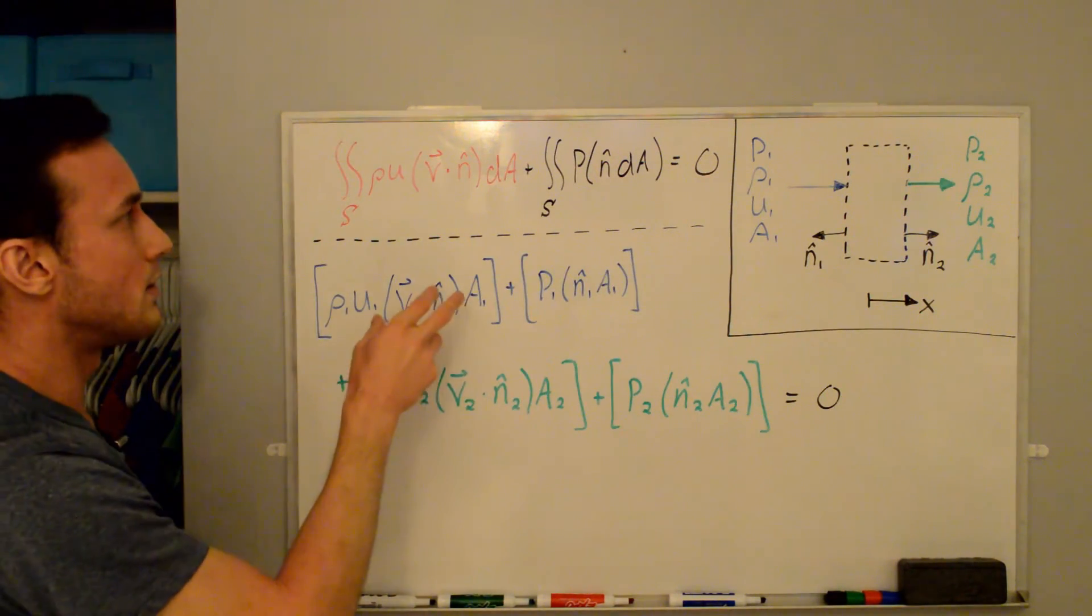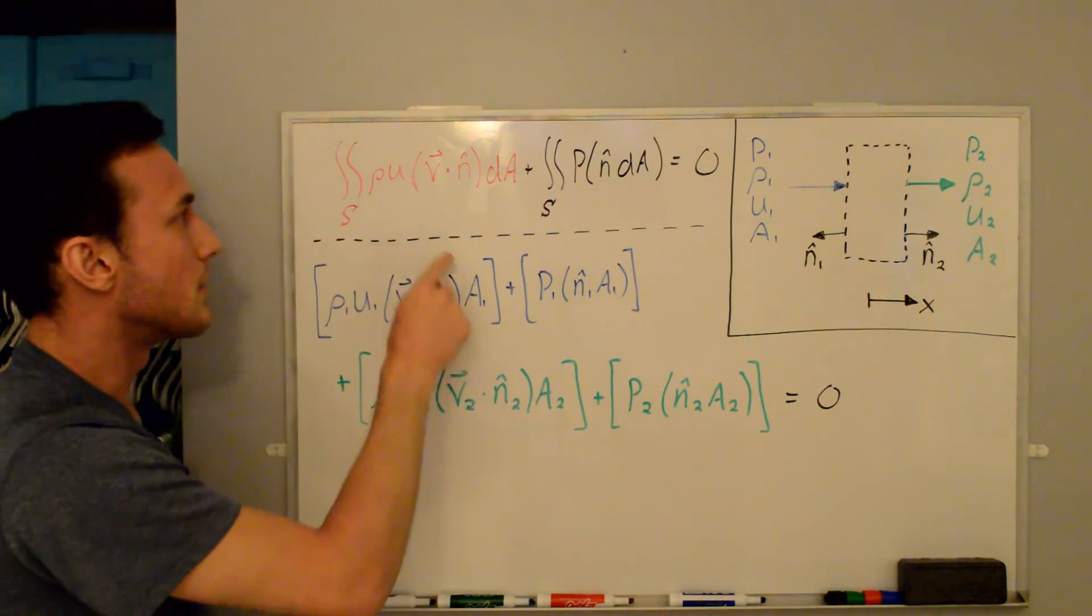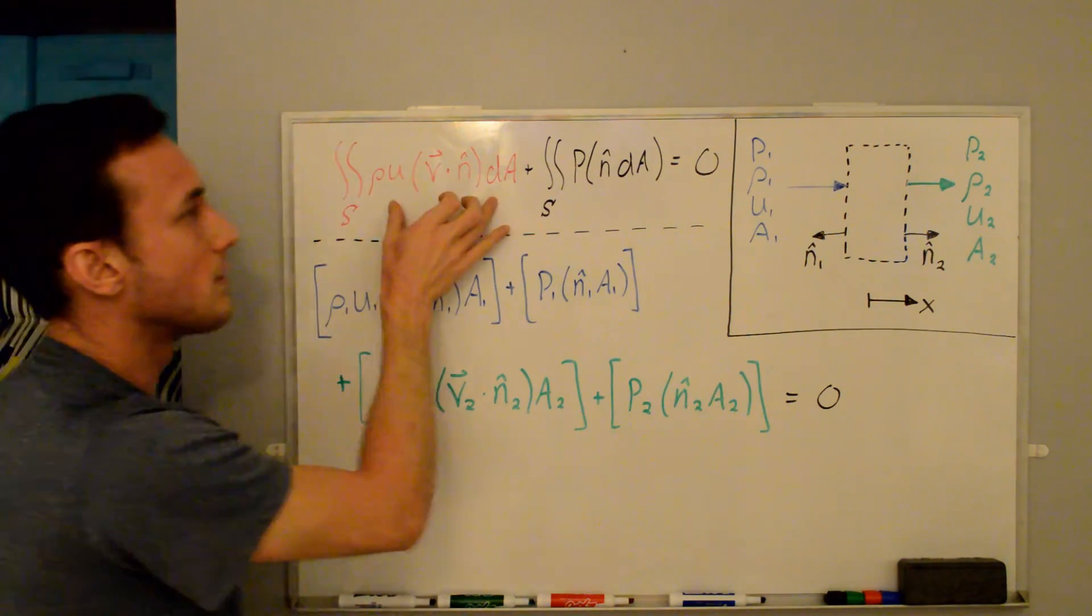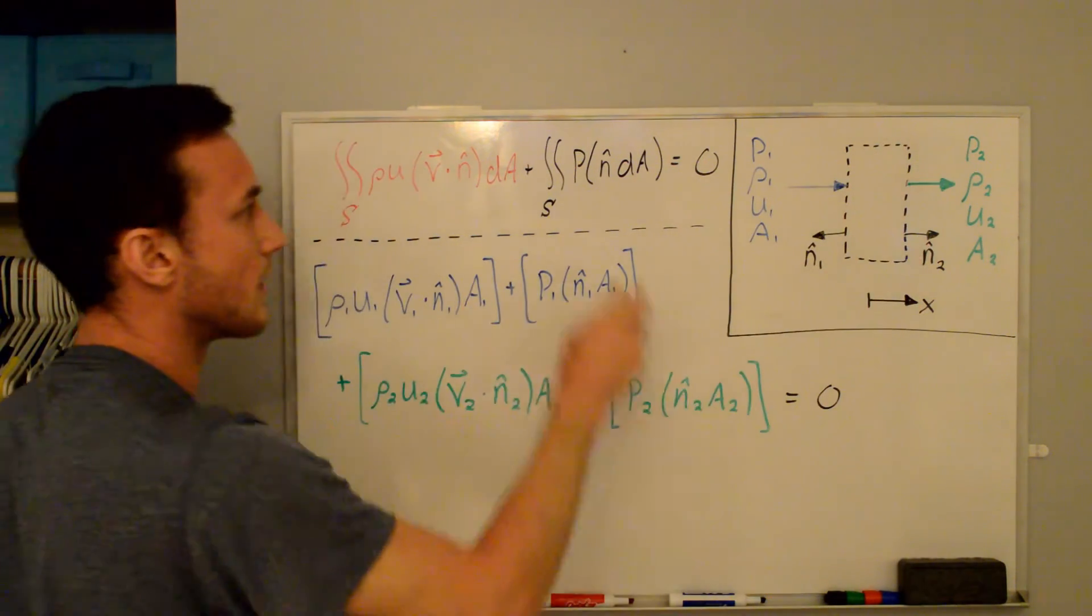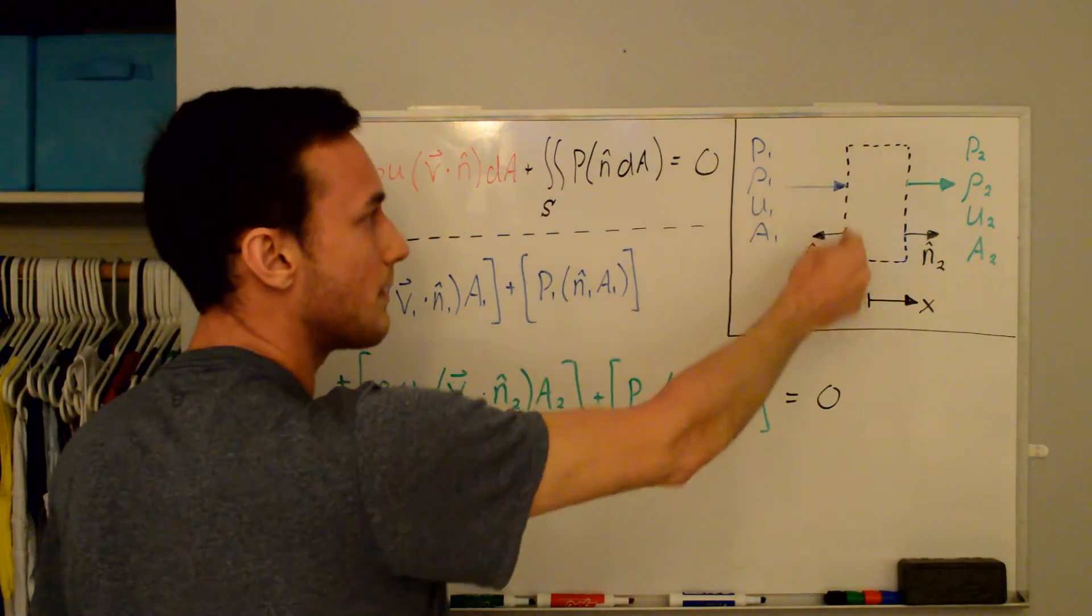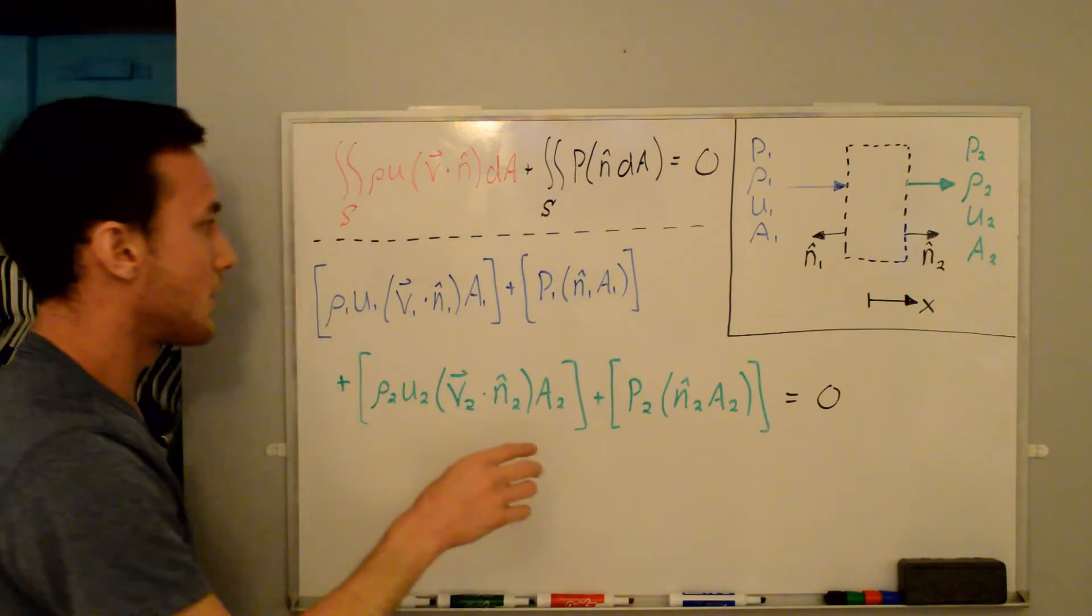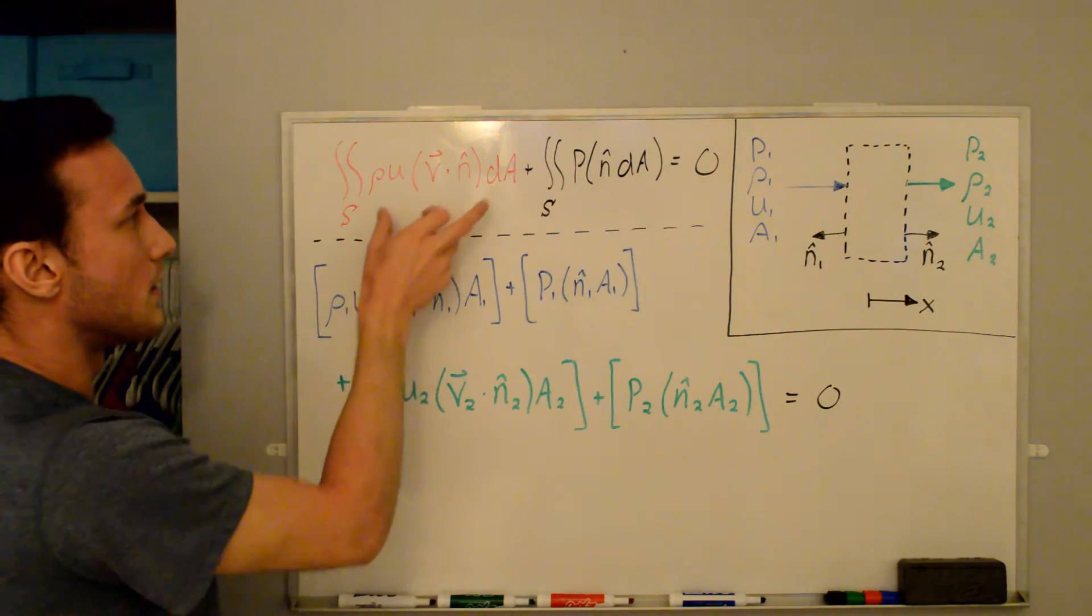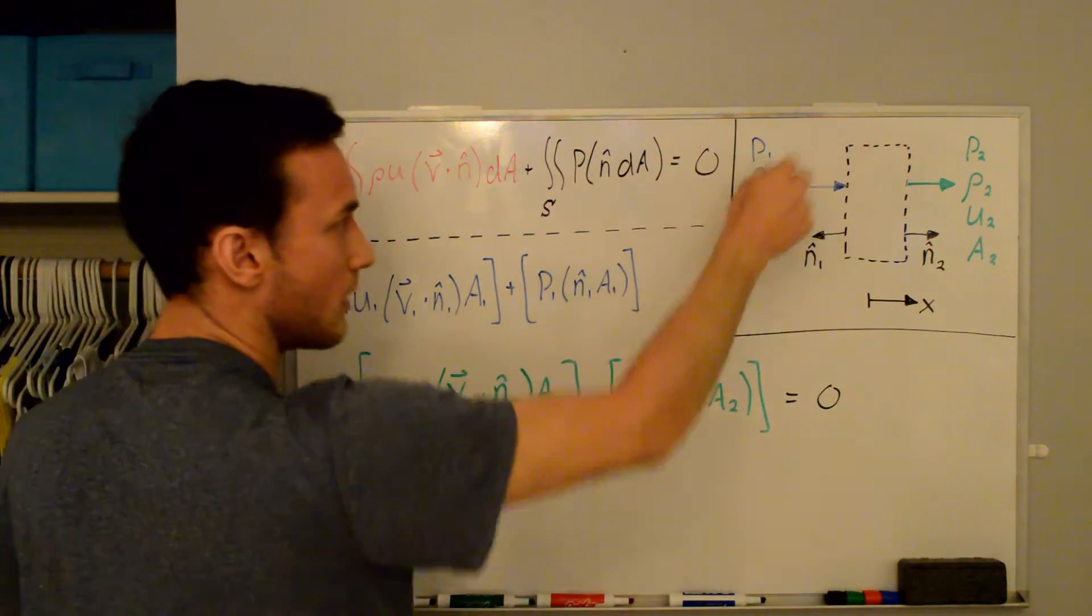So now what we're going to do is we're going to take these surface integrals and we're going to end up getting four terms because for this term we're integrating over the left surface and we're integrating over the right surface. And then for this term we're doing the same, integrating over the left surface and the right surface. So we end up with four terms that you see in this equation right here. And so this first term is the integral over the 1 surface, the state 1.